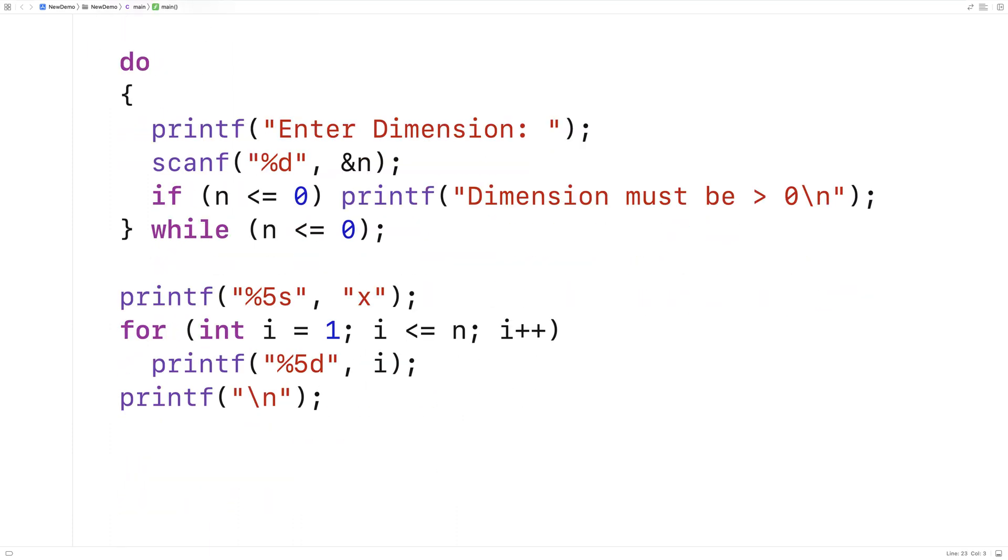Now to actually produce the grid of products, we're going to have to have a doubly nested loop because we're going to have to multiply essentially i times j, looping i and j from one to n.